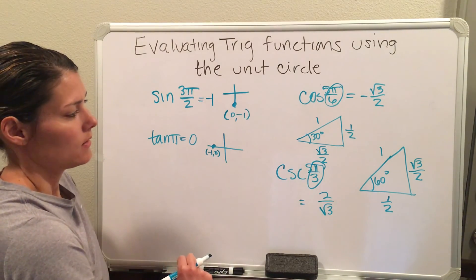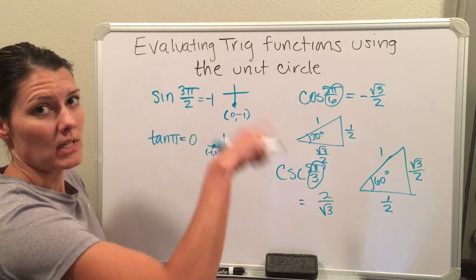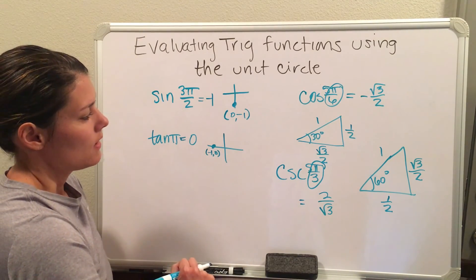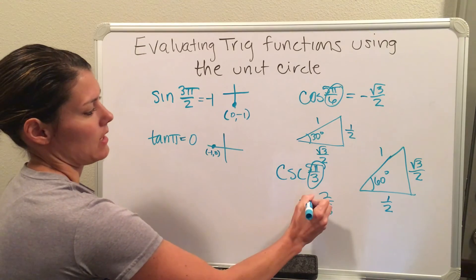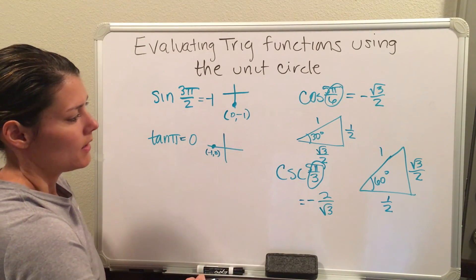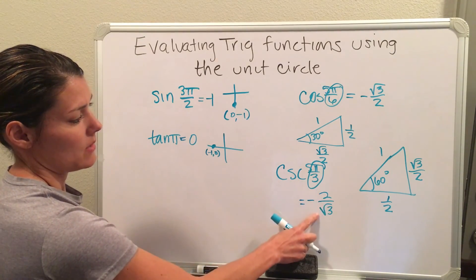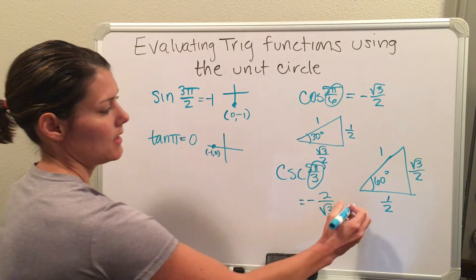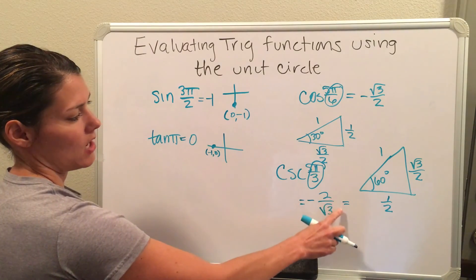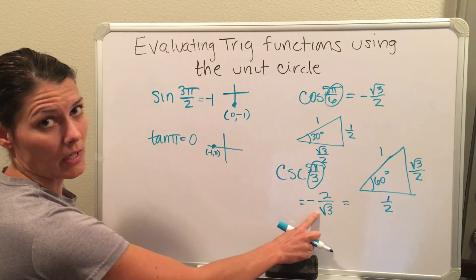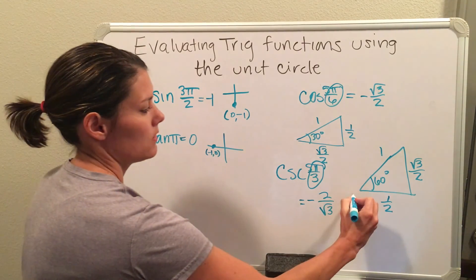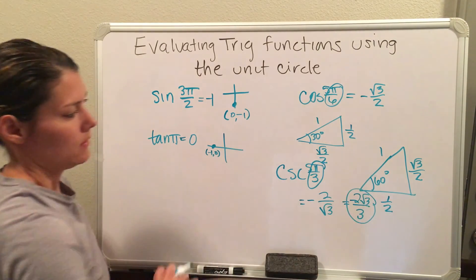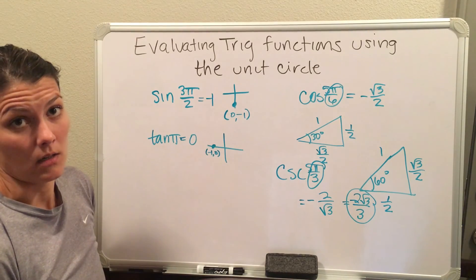I also need to determine what sign goes in front. 5π over 3, if you know your degrees and your radians, you will know that that is in the fourth quadrant. And y values in the fourth quadrant are negative. Now another thing that you're going to have to do to this number, this is an answer that you can make final, but if you need to rationalize it, you need to go ahead and multiply the top and the bottom by the √3 for rationalizing. So you will get -2√3 over 3 to get that square root out of the denominator.